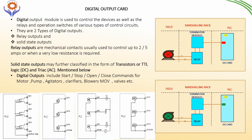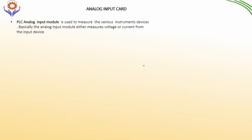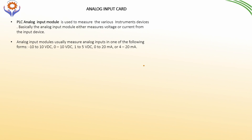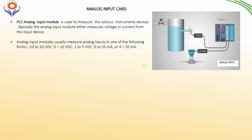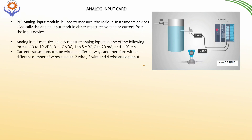The other important I/O devices are analog input devices. The PLC analog input module is used to measure various instrument readings. Basically, the analog input module measures either voltage or current from the input devices. Analog input modules usually measure the analog input in one of the following forms: -10 to +10V DC, 0 to 10V DC, 0 to 20 milliamperes, or 4 to 20 milliamperes. For major industrial instruments, they typically use 4 to 20 milliamps — why we use 4 to 20 milliamps will be covered in a separate class.